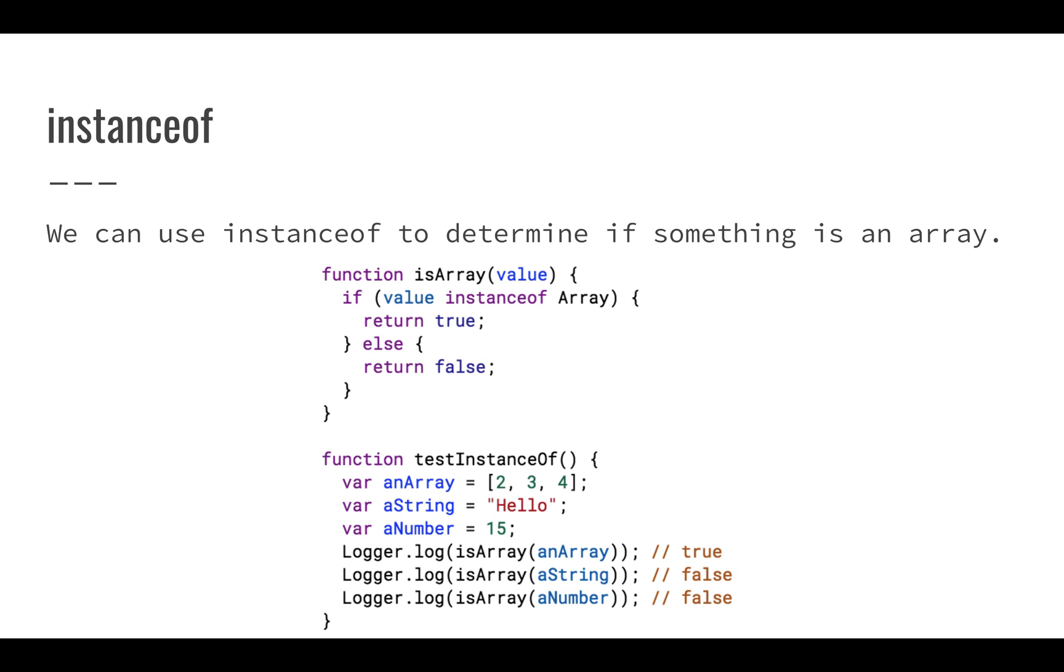I can also determine if something is an array. So this might be useful if I have a function, for example, when I'm trying to determine if I want to have a single value or I want to have an array of values, if I want to perform some operation on just one thing or on an array of things. So you can see I have this isArray function, and that's just going to tell me if the parameter is an array. And you can see down below I have a test instance of. I'll create an array, I'll create a string, and I'll create a number. And I'll check to see if array is an array, and that's going to give me true. So value instanceof Array, when I pass in an array, that is going to give me true. If I pass in a string or a number, it's not going to return true.